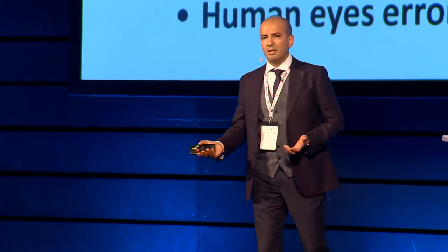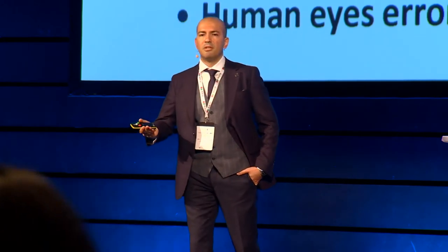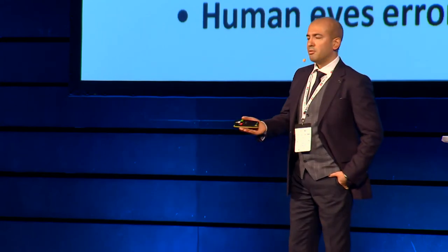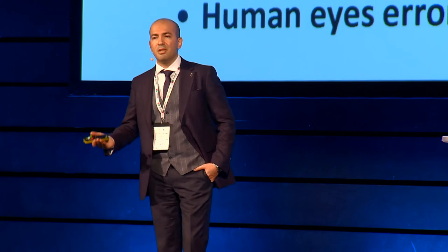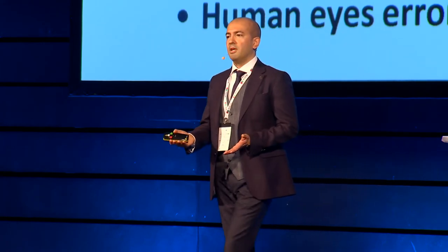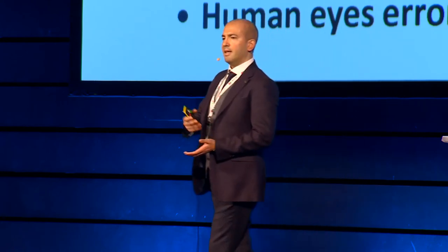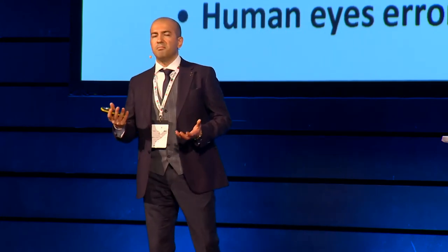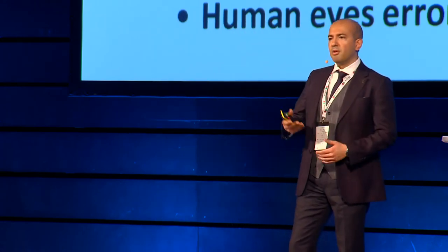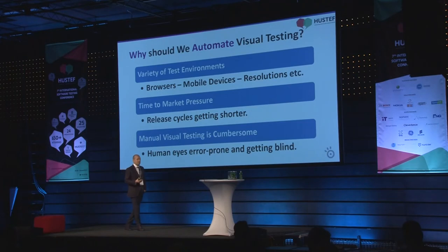We are in an agile world and release cycles are getting shorter and shorter. In each release cycle, we do several software testing activities such as user story testing, exploratory testing, UI testing, UI test automation, API automation, performance testing — a lot of things. If we add visual testing into that cycle, it is better to automate this process because we don't have enough time. If we do the visual test in each cycle again and again, it becomes a very boring and cumbersome process. Human eyes are error-prone; after a while, we cannot detect problems very easily. Because of these reasons, it is better to automate visual testing as much as possible.